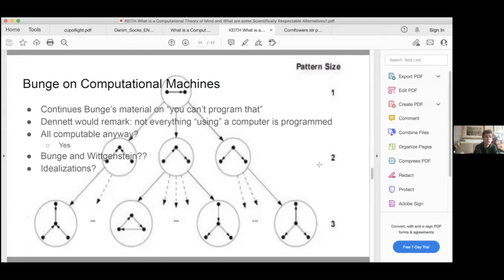Bunge's third argument on computational machines continues the notion you can't program that. Dennett's remark that not everything in a computer is programmed, is absolutely right here, as far as I'm concerned. However, Bunge already preemptively answers that. It's all computable in the sense of computability theory already. It has to be for deep metaphysical reasons as he and I would agree on.